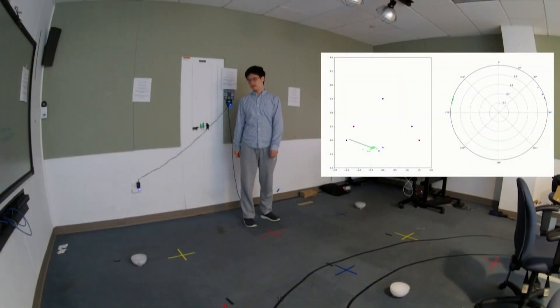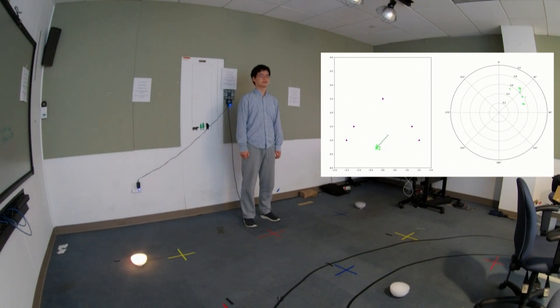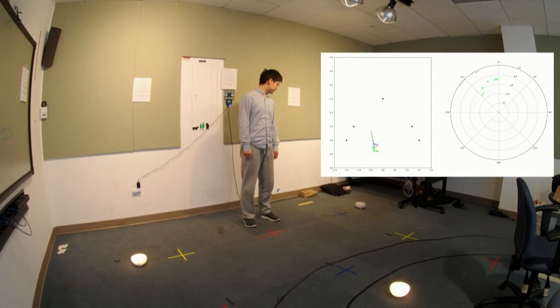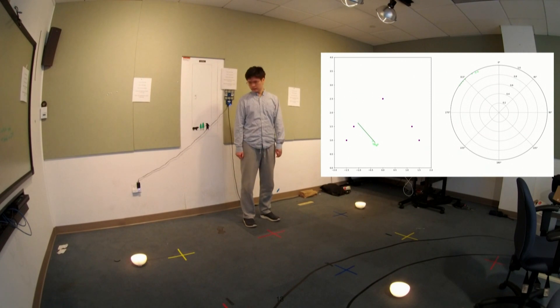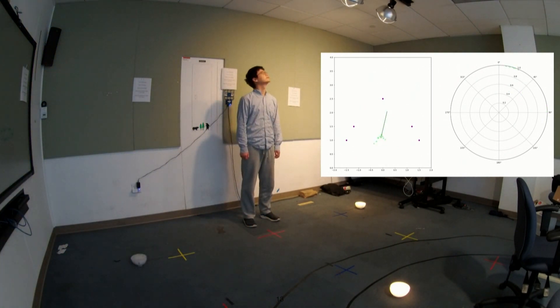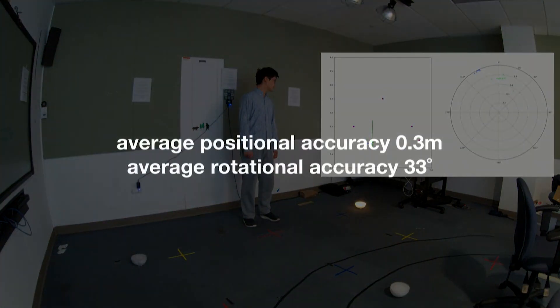Here is how it works live. The right part shows the prediction result of the model — you can see the position and direction of the output. This is actually a worst case for our system because I'm facing exactly away from the microphone array. The system performs better when speaking towards the array. With five lights in a room, you can see it achieves nearly 100% accuracy in turning on the correct light. We get average position accuracy of around 0.3 meters and average rotation accuracy of 33 degrees.